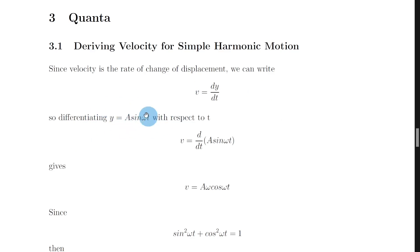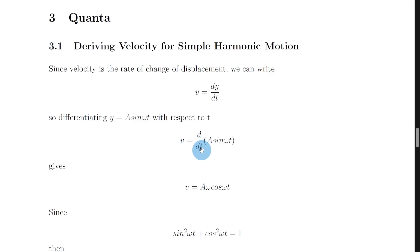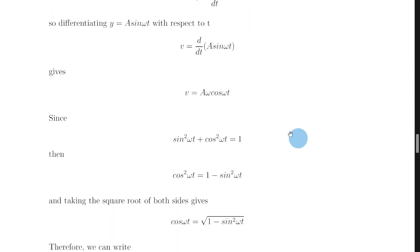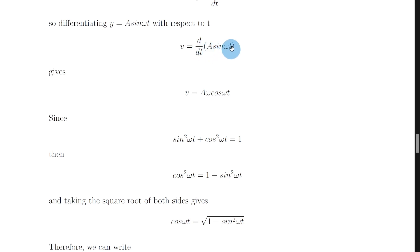Since we have an expression for y, we can substitute this into our expression for velocity. So we want to differentiate y equals a sine omega t with respect to time t. So we have v equals d by dt of a sine omega t. If we differentiate that, we get v equals a omega cos omega t, because we need to multiply by omega — since it is in front of the t — and then differentiate sine to get cosine.